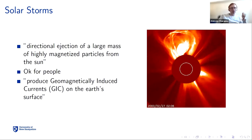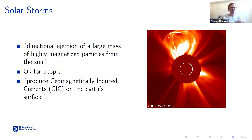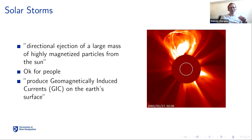The paper talks about coronal mass ejections (CMEs), commonly known as solar storms. CMEs are directional ejections of large masses of highly magnetized particles from the sun. The good thing is it's perfectly fine for people — Earth has a magnetic field that stops most of that. However, when CMEs actually hit Earth directly, they produce geomagnetically induced currents, which are dangerous for our equipment.